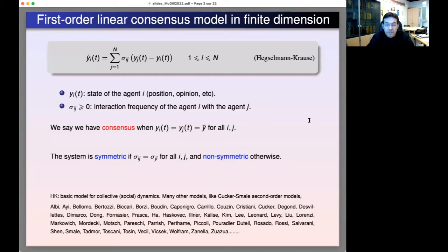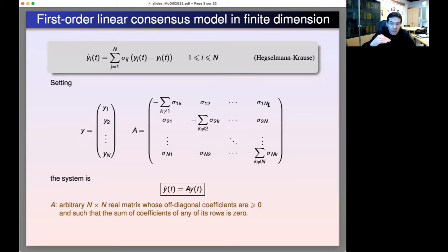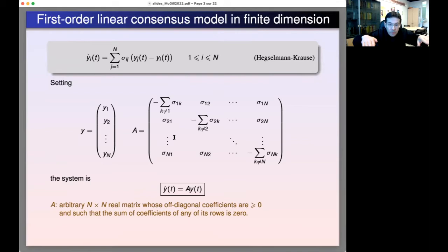To explain the main ideas, let me write the linear system in matrix form. I introduce the matrix A, which contains the coefficients sigma_ij representing the interactions. On the diagonal of A you find the sum of all other coefficients row by row. So capital A is an arbitrary real matrix of size N, whose off-diagonal coefficients are non-negative, and which is chosen such that the sum of coefficients along any row equals zero.